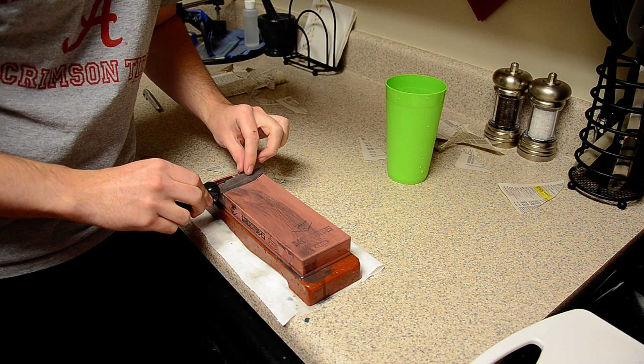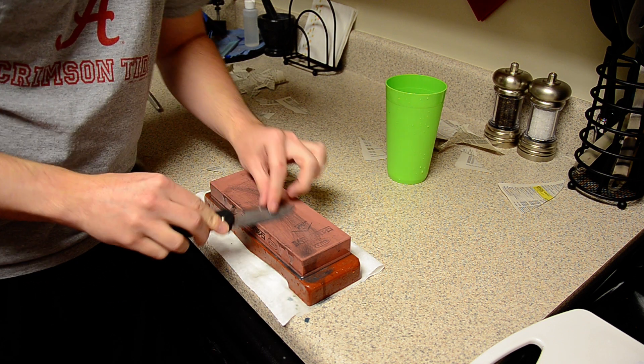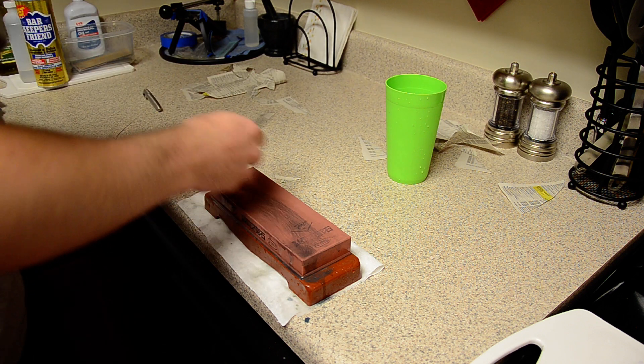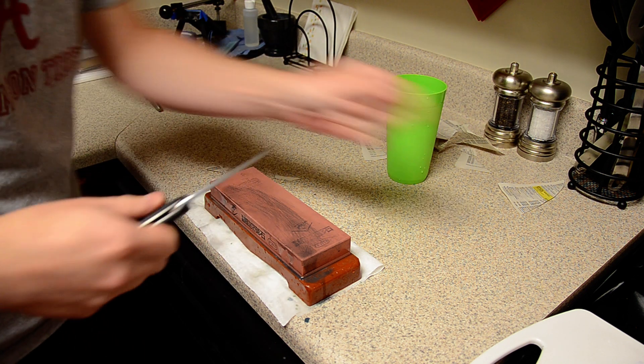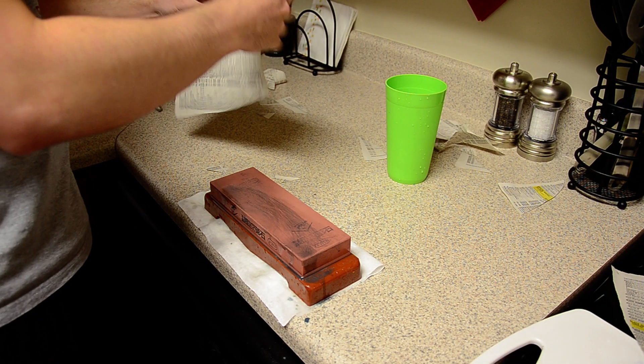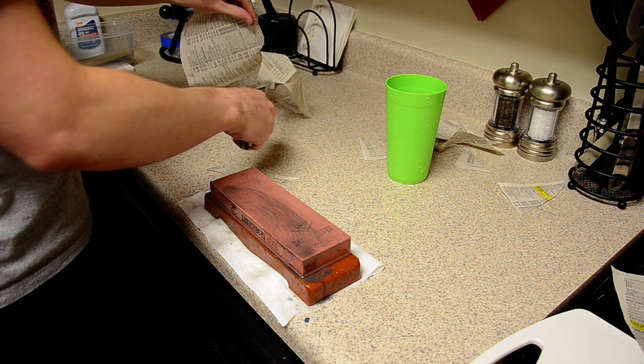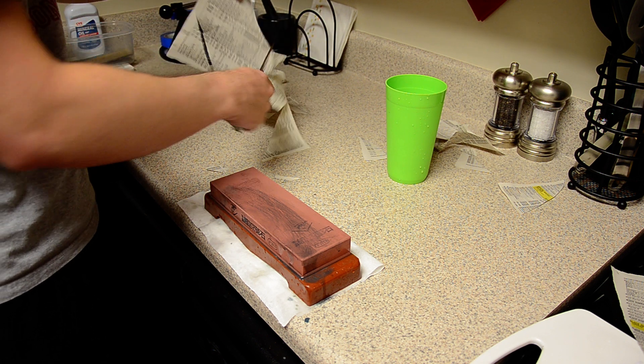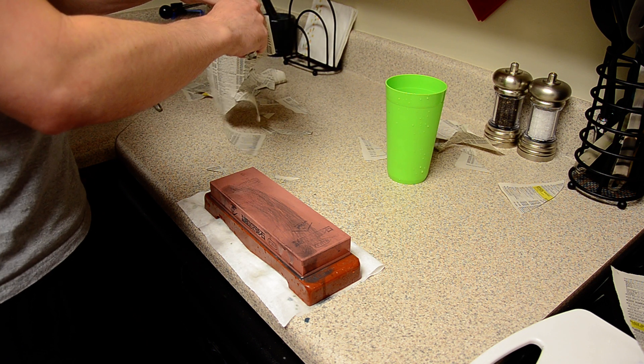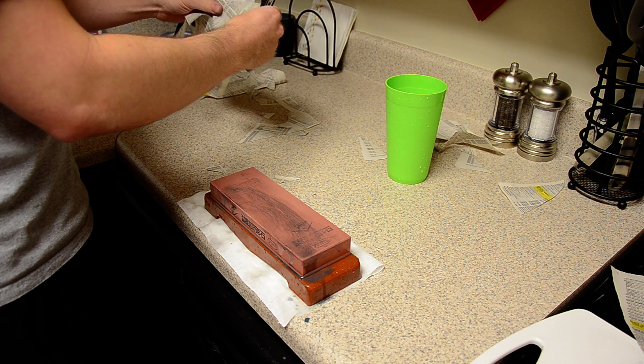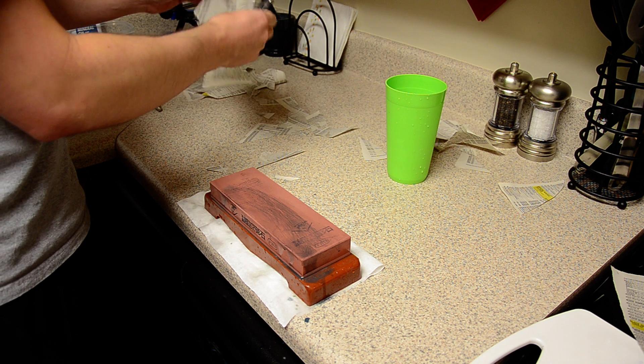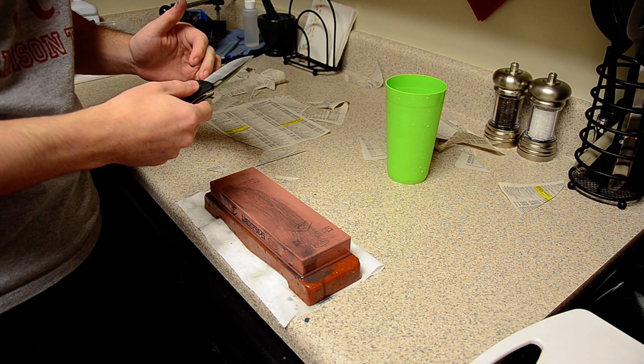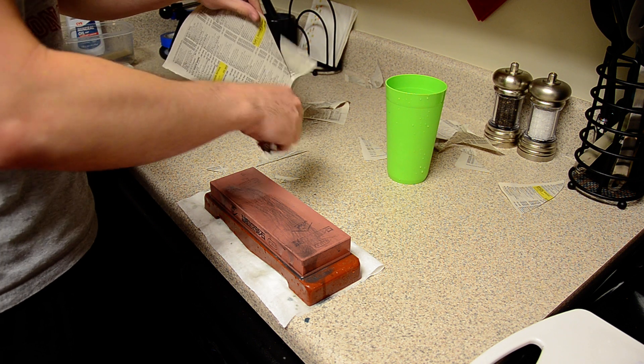Going to go ahead and test the edge on this 3000 grit. See what we have here. As to be expected, a very very sharp edge. I think what I'm catching on is a roll that happened during the test that I didn't remove with the 600 grit stone. I didn't take it down to a really coarse grit, I didn't form a huge burr.